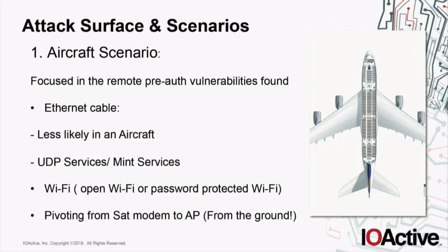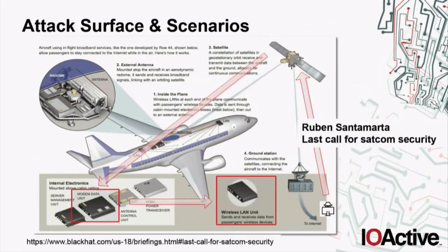In the aircraft scenario there's another attack surface: pivoting from the satellite modem to the access point from the ground. My co-worker Ruben Santa Marta recently spoke about this at Black Hat — 'The Last Call for SATCOM Security' — where he was able, using a regular internet connection, to hack and compromise satellite modems of aircraft that are actually flying in the air. Based on information we found online, the attacker should be able to reach from the satellite modem the access point running WiNG OS. This could be another attack surface.